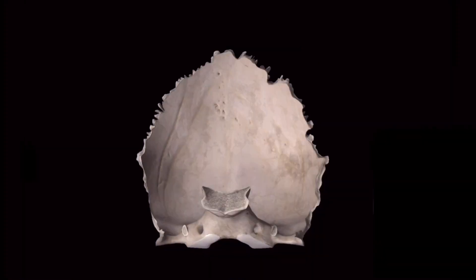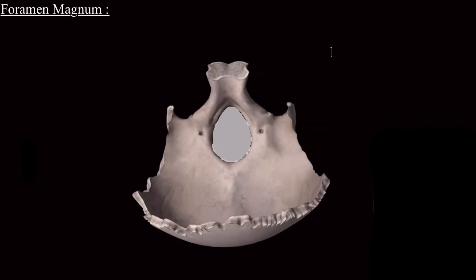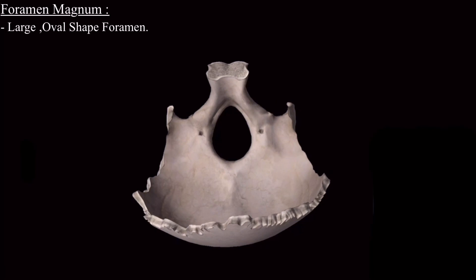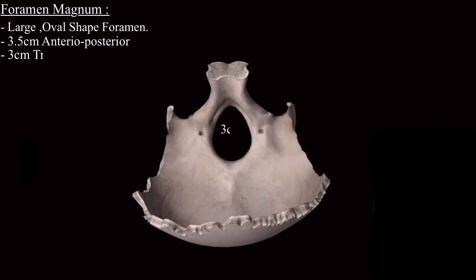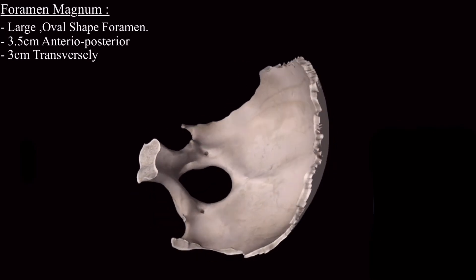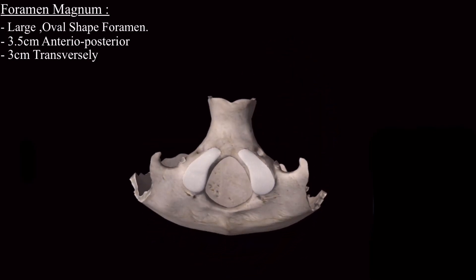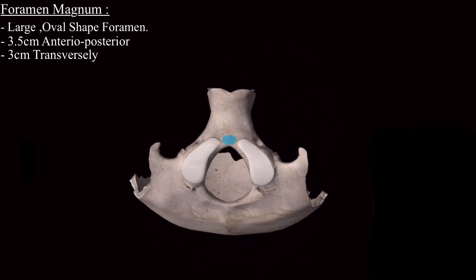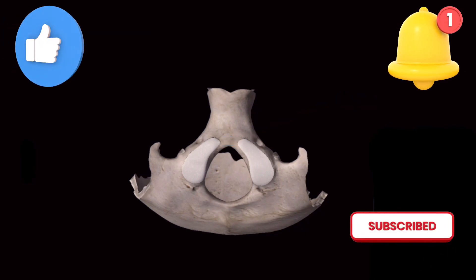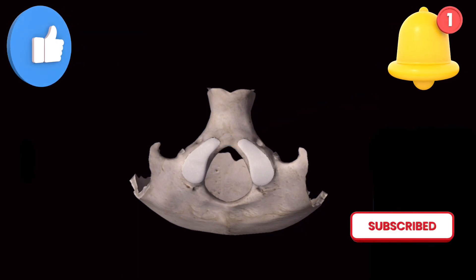The last part of the occipital bone is the foramen magnum. It is a large, oval-shaped foramen. In adults, the approximate diameter is 3.5 cm anteroposteriorly and 3 cm transversely. From the inferior view, the midpoint of the anterior border is called the basion. That's all about the occipital bone.